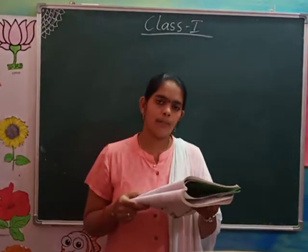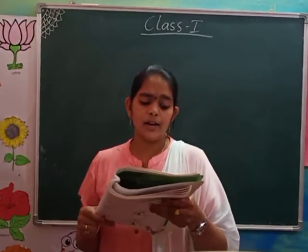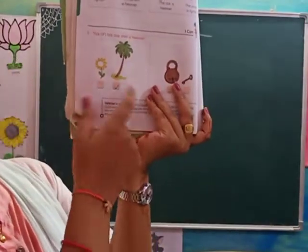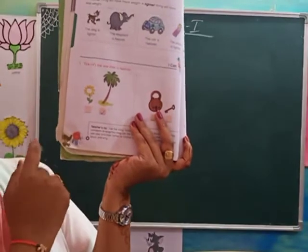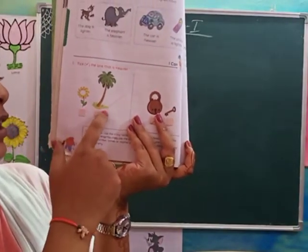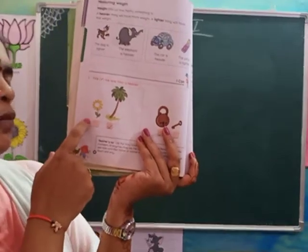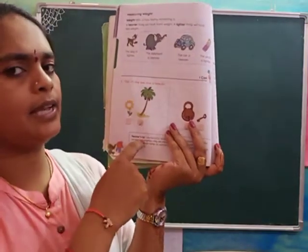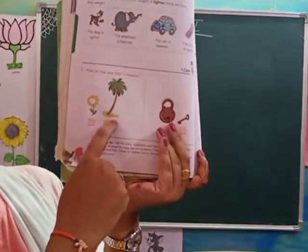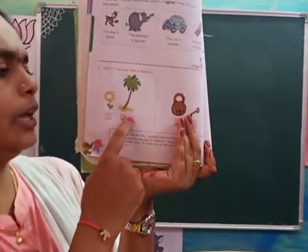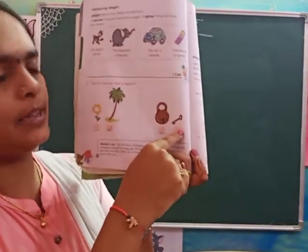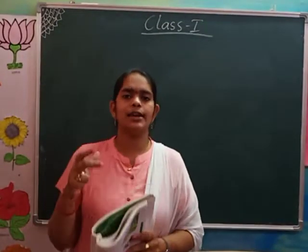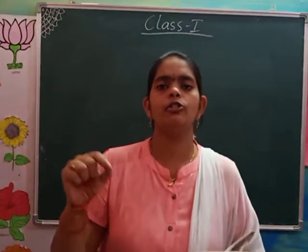Next, in page number 40, there is one exercise. Pick the one that is heavier — a small flower or a big tree. This flower is lighter than the tree, so the coconut tree is heavier — you have to tick the tree. And next, lock and key — which one is heavier? Lock is heavier than the key, so you have to tick on the lock.